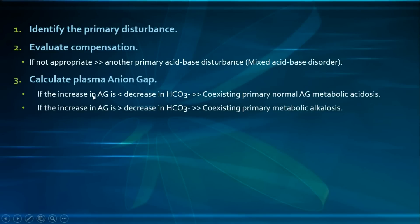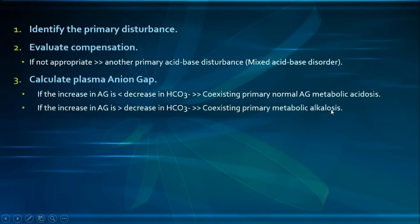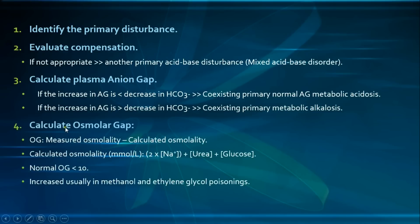The anion gap to bicarbonate ratio can provide additional information. If the increase in the anion gap is less than expected for the decrease in bicarbonate, there is a co-existing normal anion gap metabolic acidosis alongside high anion gap metabolic acidosis. If the increase in anion gap is more than expected, there is a co-existing primary metabolic alkalosis with primary high anion gap metabolic acidosis. For more details, visit the metabolic acidosis video.